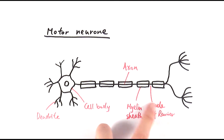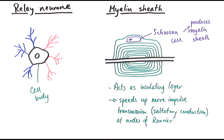Along all the neurons we find the myelin sheath and the nodes of Ranvier. The myelin sheath is a layer of plasma membranes, or a layer of fats, which acts as an insulating layer allowing saltatory conduction to occur. These myelin sheaths are produced by Schwann cells, which deposit the myelin along the neuron.